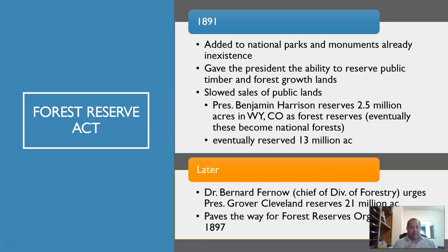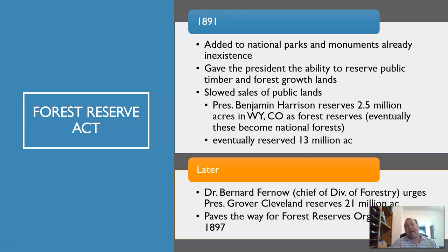This is the beginning of the turn — rather than giving all this land out to people and having big companies buy it all up, the government would now hold back some land. Eventually this led to about 13 million acres of reserves, and this is the start of national forests as we know them today.